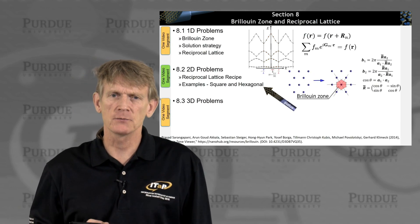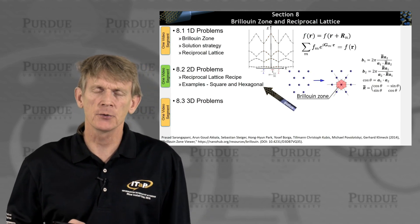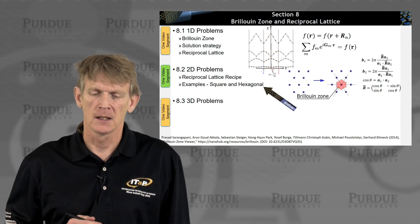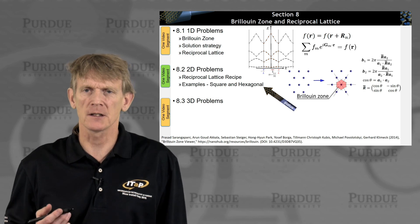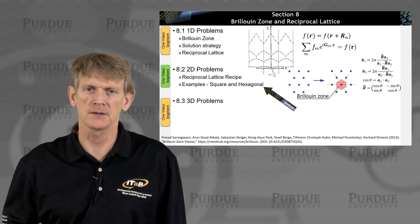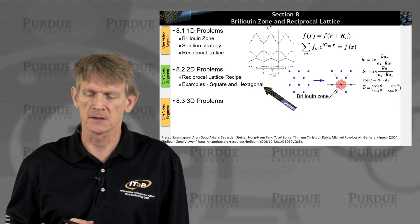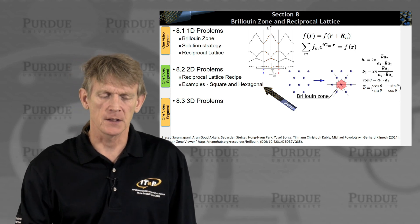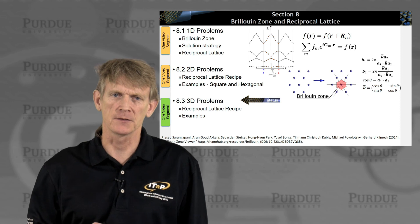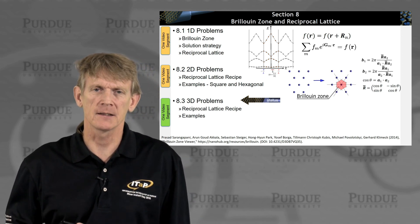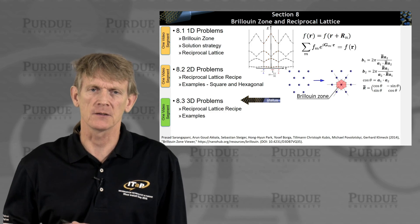So this really concludes the segment on 2D problems. We have these five Bravais lattices in 2D. We have a methodology to obtain the reciprocal vectors. You can tabulate it, you can memorize the functions. And now we're going to step over and do the same thing for a 3D system, where there are more basis sets, more Bravais lattices, and a couple more interesting symmetries.